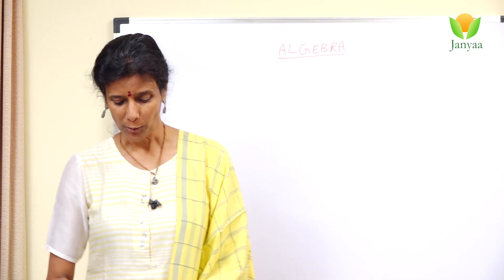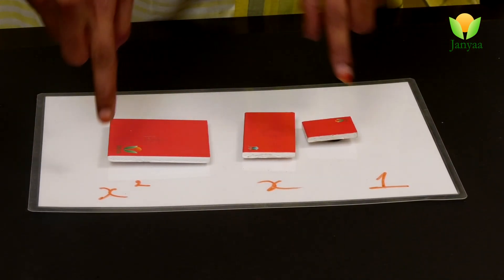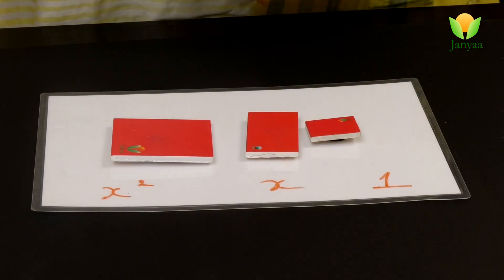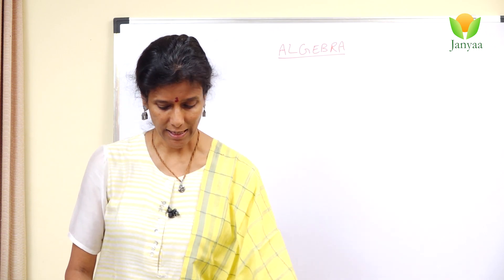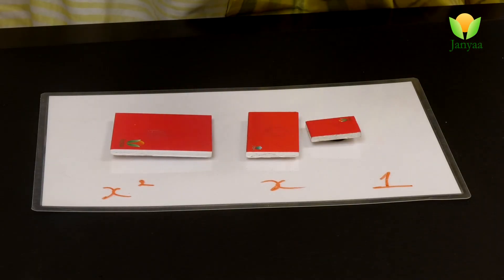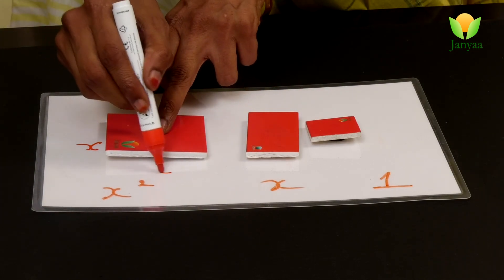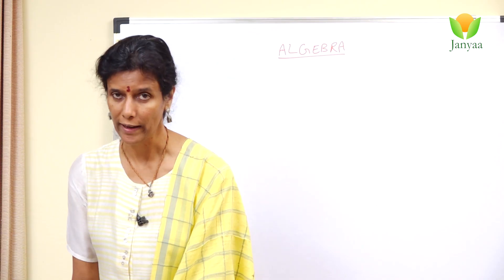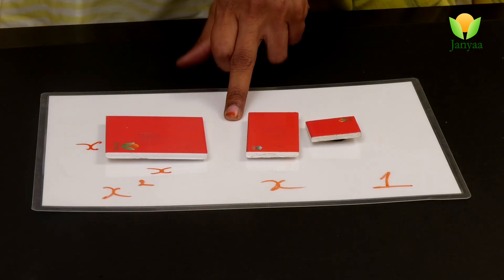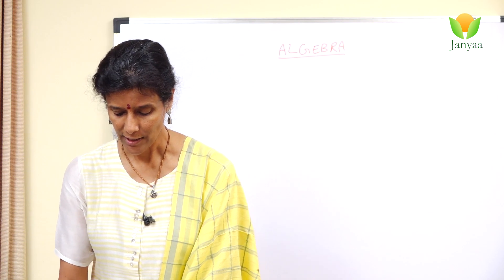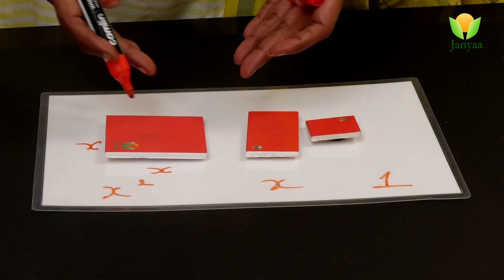Okay, so we'll be using these three types of tiles: x square, x, and one. Now how did they become x square, x, and one? Let's see. Let's think of this side as x, and this side as x because it's a square, correct? So both are x. Now what is the area of this object? x into x. We learned in geometry that the area of a square is side into side, so it's x square. That's how we get this x square.